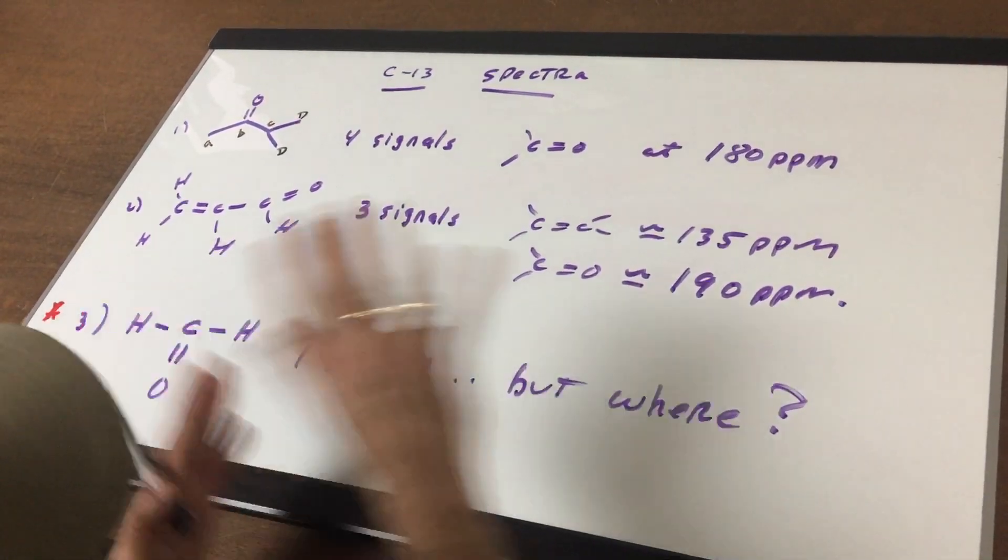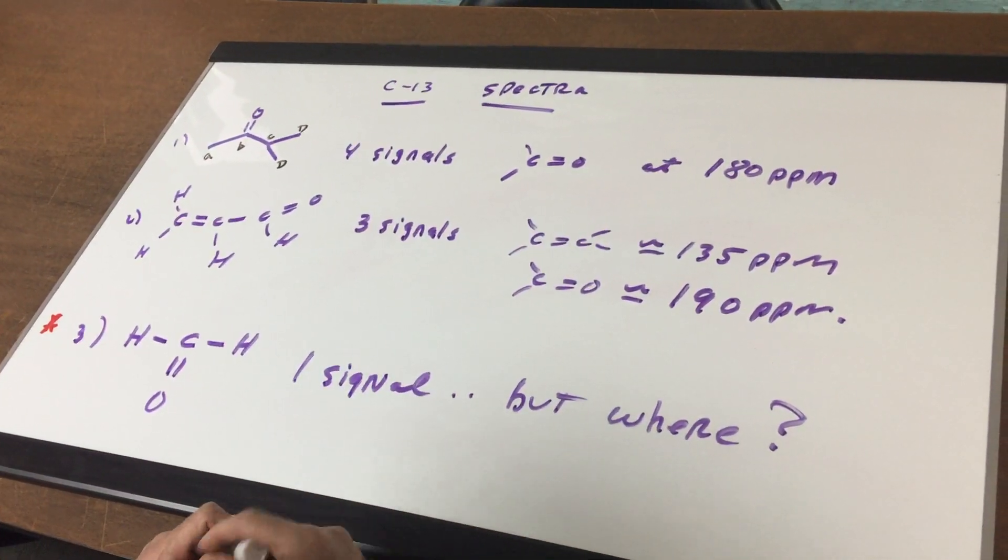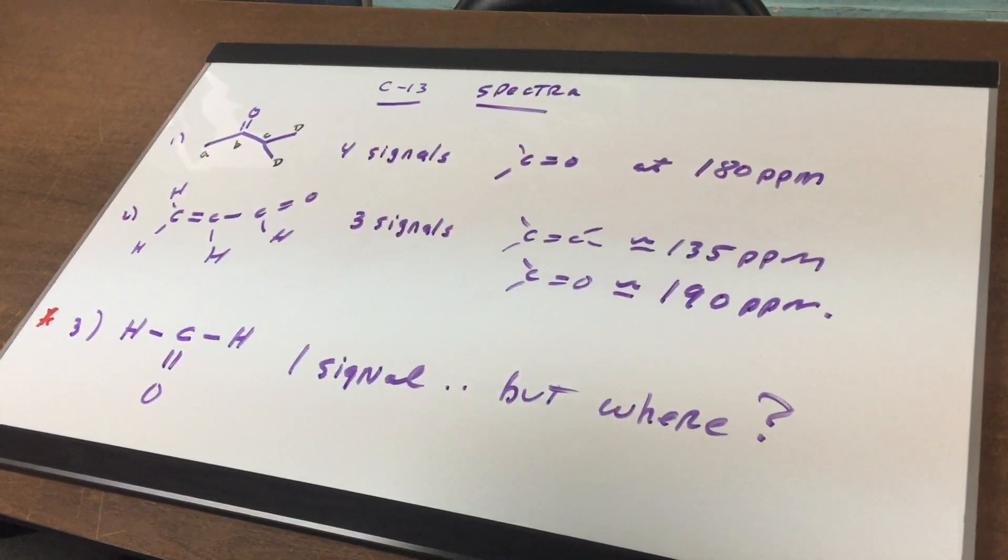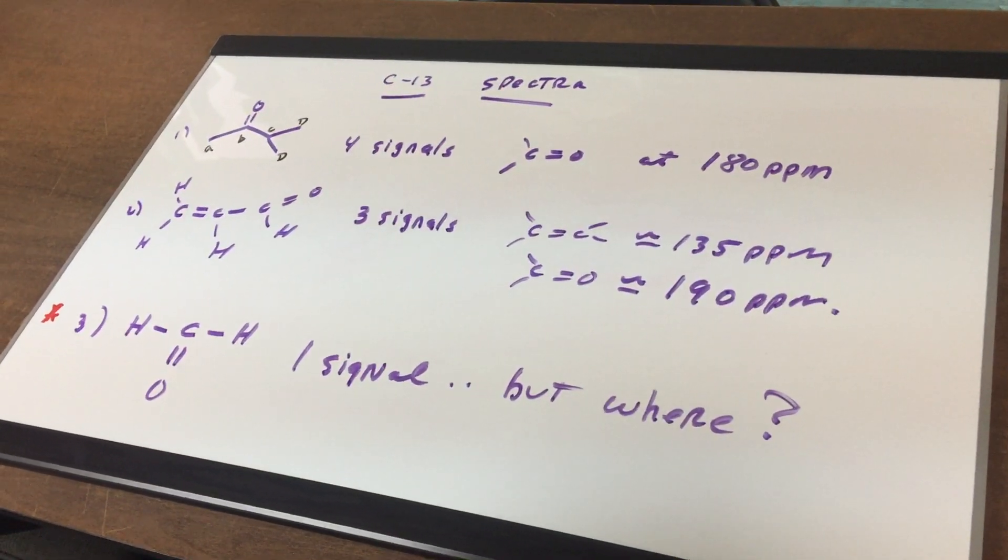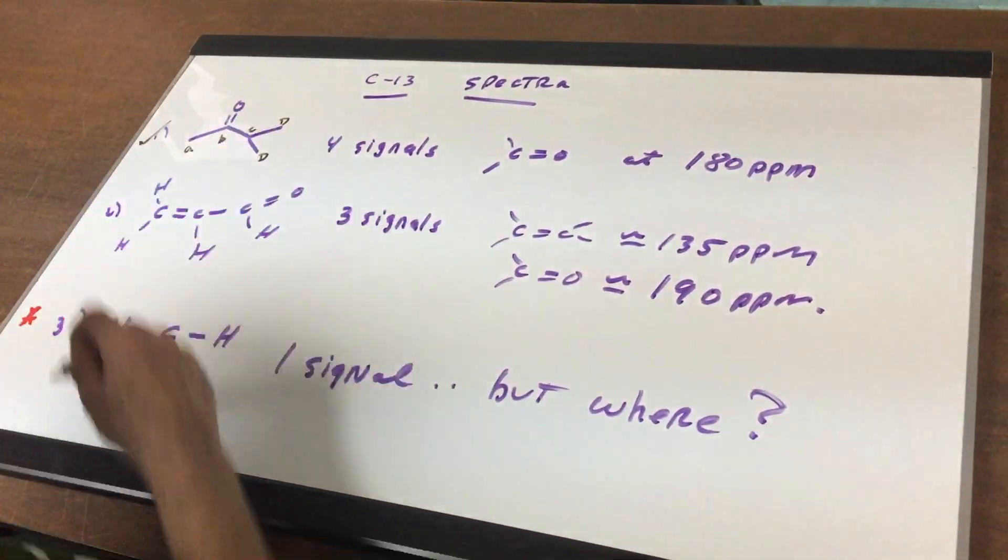Most of the signals would be way upfield, 10, 20, 30 in that area but a carbonyl comes in really downfield around 180. So I would expect four signals and I would see that nice strong signal around 180. So we got one down with ease.